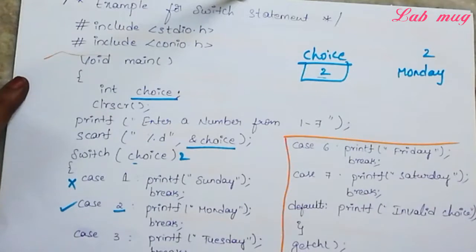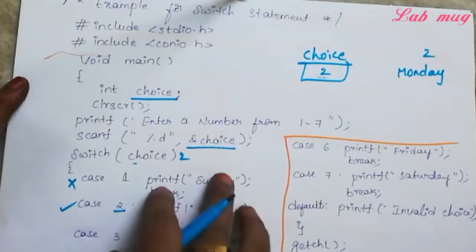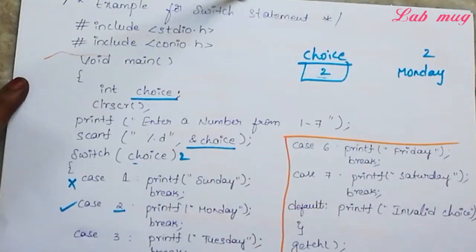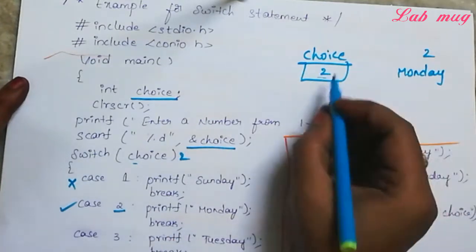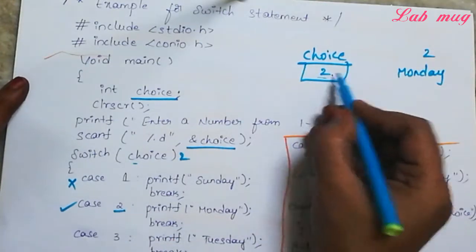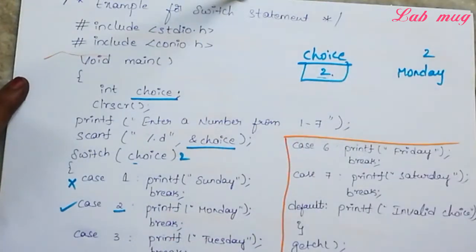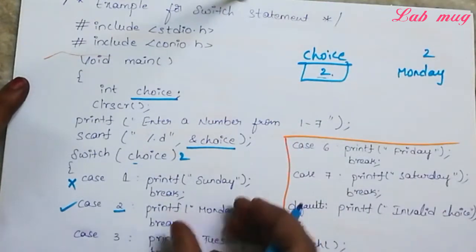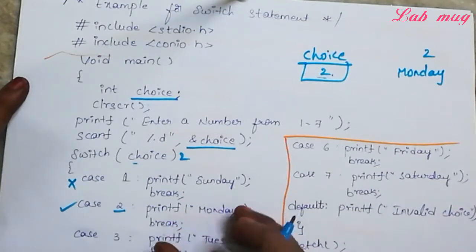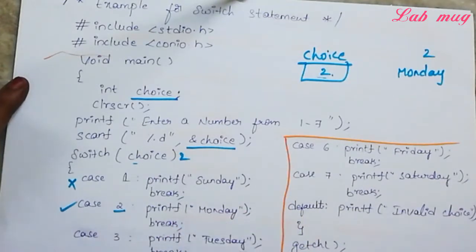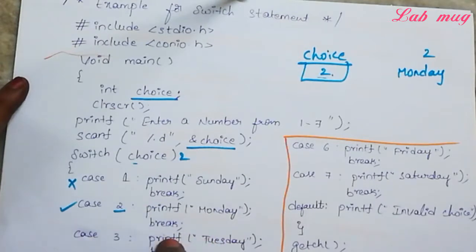Case 3, case 4, case 5 and so on print Tuesday, Wednesday, and so on. Once case 2 executes and prints Monday, the break statement causes control to exit the switch, skipping the remaining cases. That is why the break statement is used here.